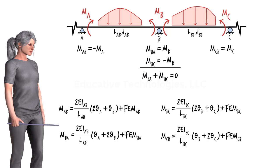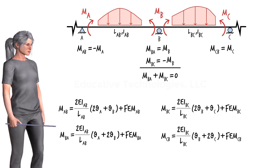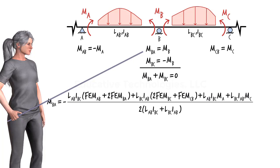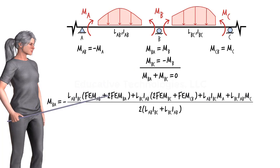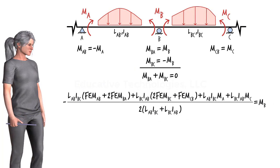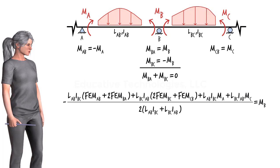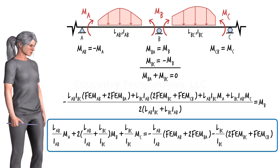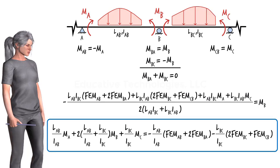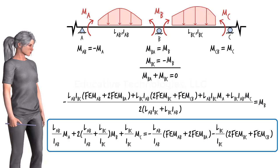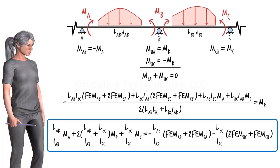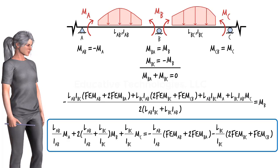For example, the expression for MBA is given, and since MBA equals MB, we can write the result. Rewriting this equation in a more convenient form gives us the general form of the three-moment equation. Note the three bending moments on the left side. The equation relates these moments to the segment lengths, the moments of inertia, and the applied loads reflected in the fixed-end moment values.